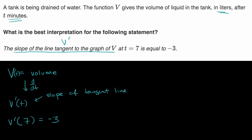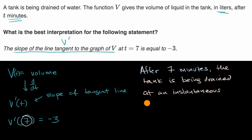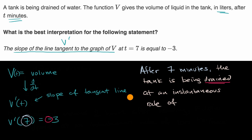So you could write it out: after seven minutes, the tank is being drained at an instantaneous rate. Now you might be tempted to say negative three liters per minute, but the negative three just shows that the volume is decreasing. The negative is already accounted for when you say it's being drained — if it were positive, it would be being filled. So the tank is being drained at an instantaneous rate of three liters per minute.